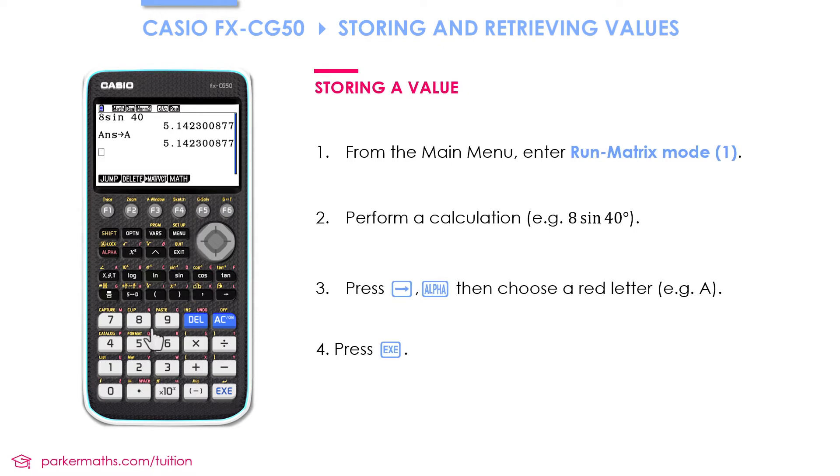Suppose I do a different calculation. Let's do 8 cos 40, and let's suppose I accidentally press a button before I press this arrow button. If I press that now it doesn't say answer here anymore. You don't need to do your calculation again though.